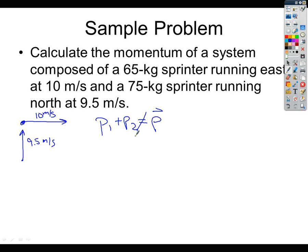So essentially what we're doing is if we redraw this system, you've got one runner going this way, the other one going this way. We need to find this side because that would be the sum of the two momenta. So we have the momentum in the x, we have the momentum in the y, and our overall momentum then will be the hypotenuse of that triangle.